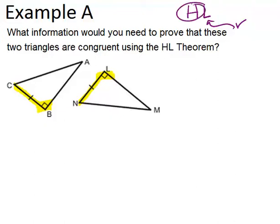So the only other thing we need is to show that we have two hypotenuses congruent. You would need to show that AC, the hypotenuse of the first triangle, is congruent to NM, the hypotenuse of the second triangle.